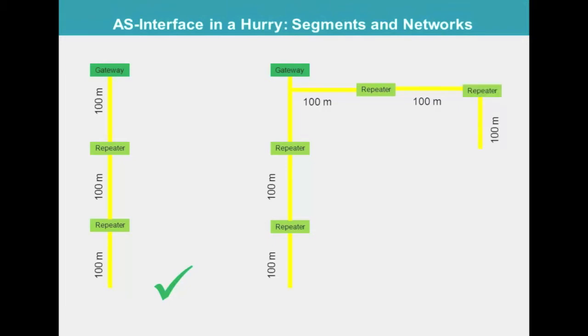Using this approach, it is possible to set up a five-segment network with 500 meter length. Note that the gateway now sits in the middle of the network. The underlying rule is that no module must be more than two repeaters from the gateway.